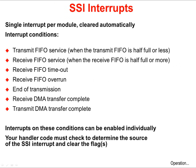Each SSI module can provide an interrupt to the CPU. Since this is a single-source interrupt, it will be cleared automatically. Conditions under which an interrupt is generated are: when the transmit FIFO is half full or less, when the receive FIFO is half full or more, if the receive FIFO times out, if the receive FIFO overruns, at the end of a transmission, or when the receive or transmit DMA transfer is complete. You can enable interrupts to occur on these conditions individually. Your interrupt handler code must check to determine the source of the SSI interrupt and clear the appropriate flags.